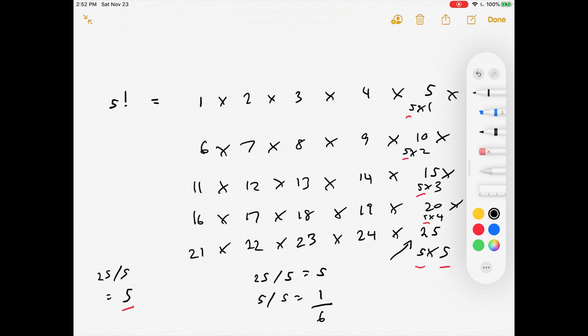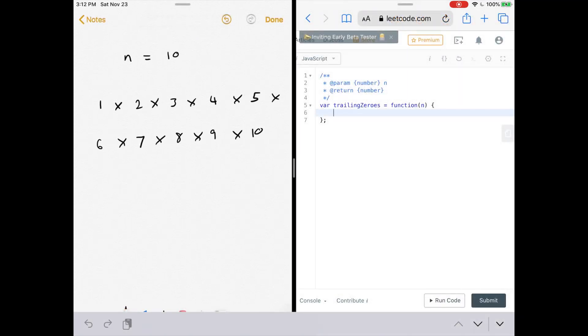Alright, so let's get to the code. What LeetCode has given us is a function called trailing zeros, which takes in n. n is the factorial that we want to find the number of zeros for. So the solution will be short. It'll be let number of fives equal zero. At the end, we'll just return number of fives.